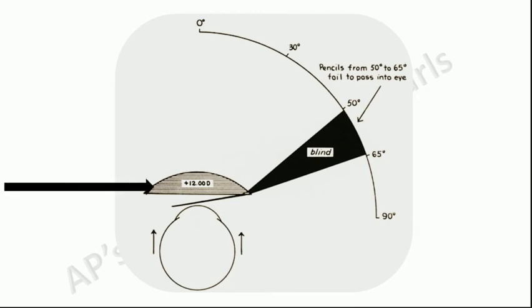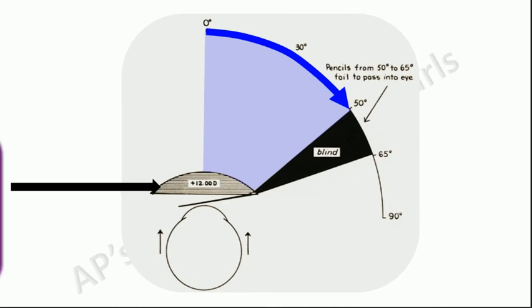Aphakes who wear high convex lenses have a limited field of vision from 0 to 50 degrees. Rays from 50 to 65 degrees fall on the periphery of the spectacle lens and, due to a prismatic effect, get deviated and do not enter the eye. Hence objects in this zone are not visible. This zone extends all around in the form of a ring and hence is a ring scotoma. Since this scotoma is not fixed in position but changes in relation to the position of the eye, it is termed a roving ring scotoma. So whenever a person turns his eyes to see an object, objects pop in and out of the visual field, giving rise to the jack-in-the-box phenomenon.